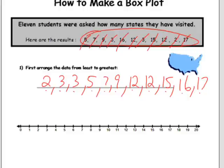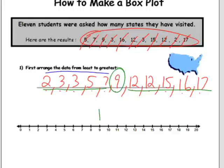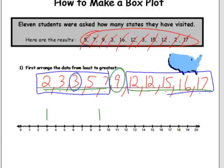After we've arranged our data, we want to find the median value. Now because this is an odd number, this is going to be easy — we've got five students on this side and five on this side, so the median value is 9. Now we need to look at the bottom 50% of the data and find the median of the lower half, which would be 3 — that's our first quartile, or lower median. Then we look at the upper 50% and find the median there, which would be 15 — that's our upper median, or third quartile.